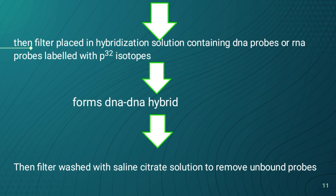The filter is hybridized with a solution containing DNA probes or RNA probes labeled with P32 radioisotopes, because each probe hybridizes with the DNA of a particular gene. The P32 is a radioactive isotope; when X-rays are applied, it emits a signal used to locate the DNA hybrids and forms DNA-DNA hybrids.